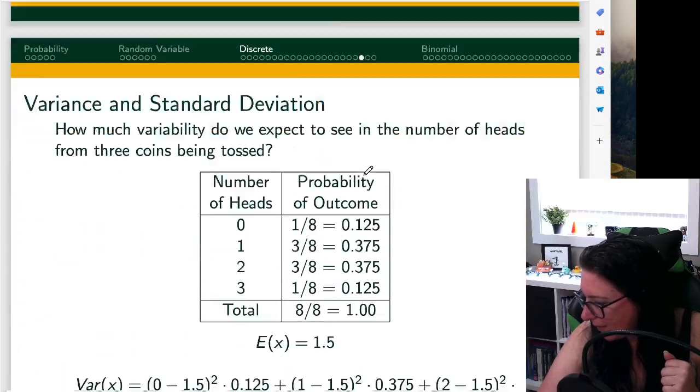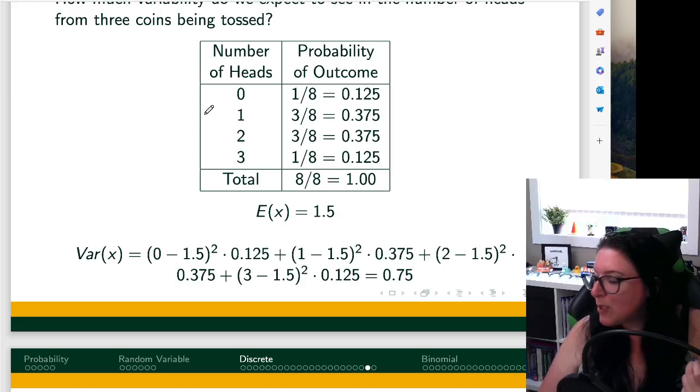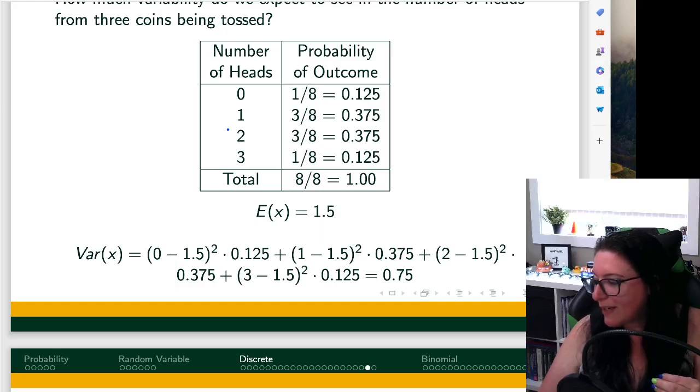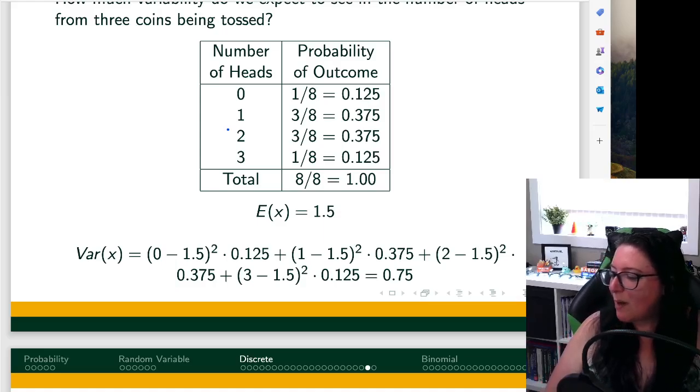Let's go through this. Number of heads zero, the average was 1.5. The difference between that is negative 1.5. We square that, multiply that times the probability of the outcome. And we repeat this process for all the different outcomes, K1 through all the different Ks, each time finding the distance between that outcome and the expected value, squaring that distance because we're really focusing on the distance, not whether it's positive or negative, and then times the probability that it occurs. And then we sum it all up.